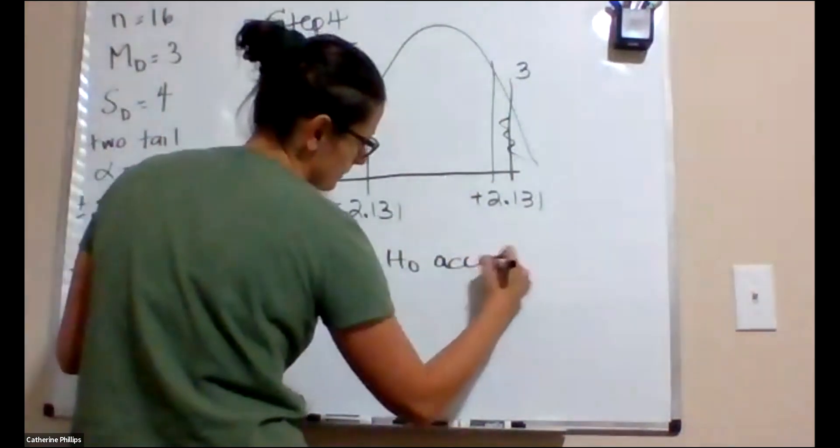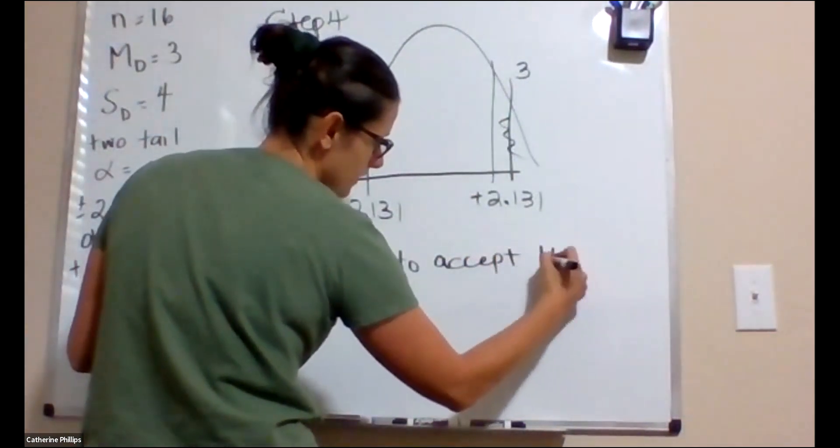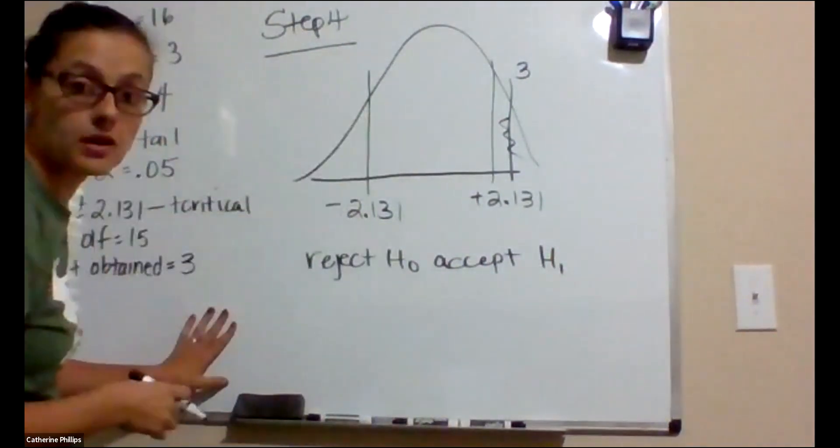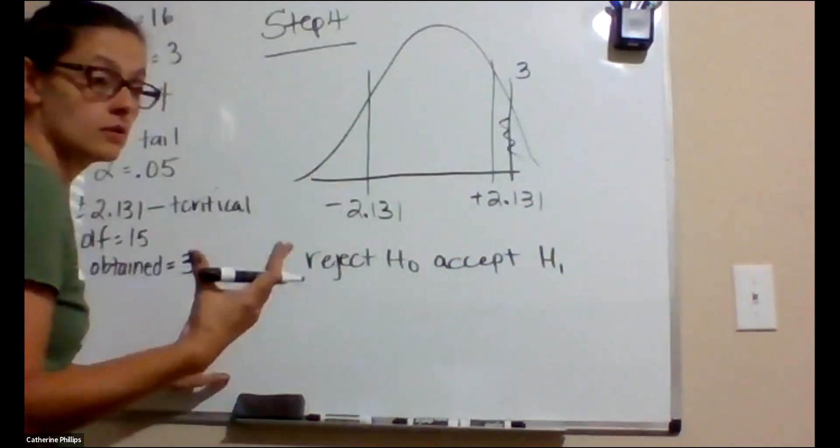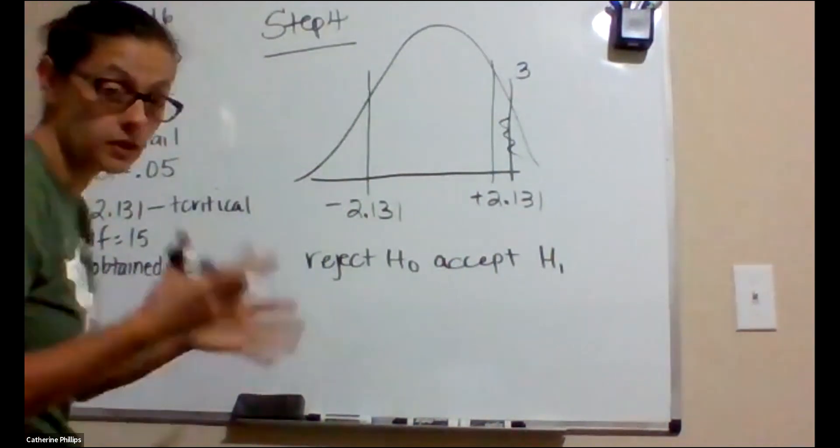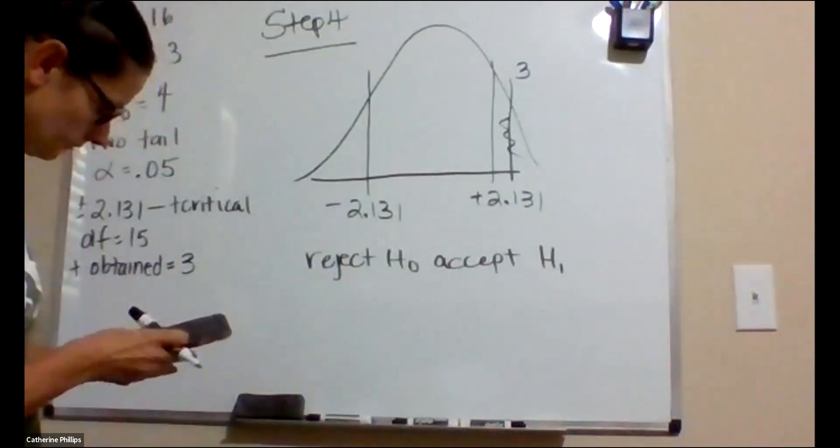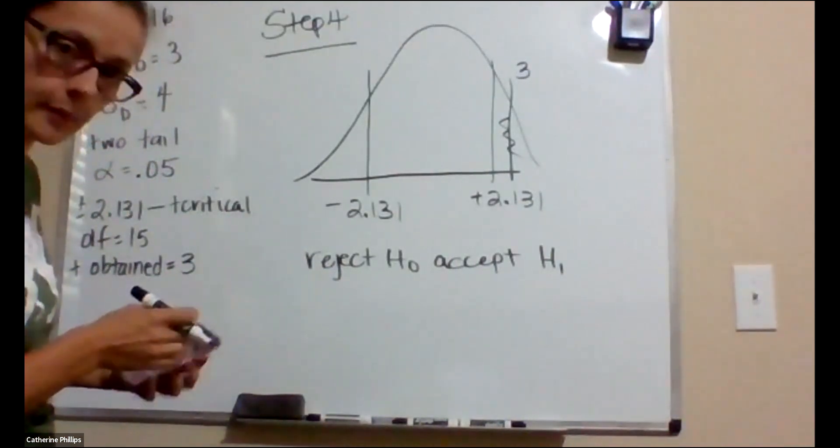We're going to reject the null, accept the alternative. This is our evidence. It shows me that you're not just guessing. Because really, you have a 50-50 shot on guessing. So we're going to pause here and we will pick it back up with 17B.